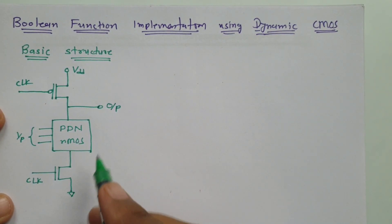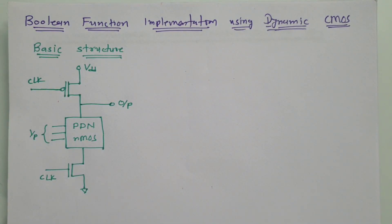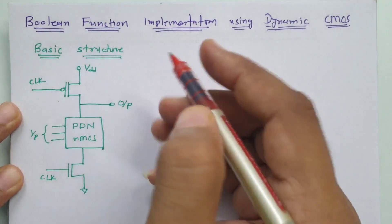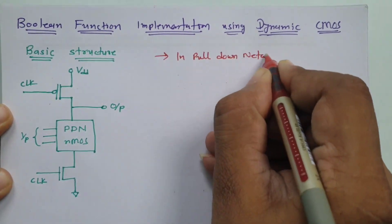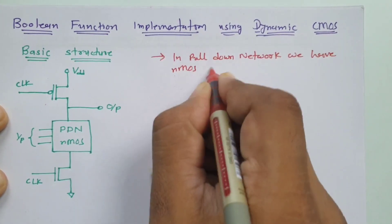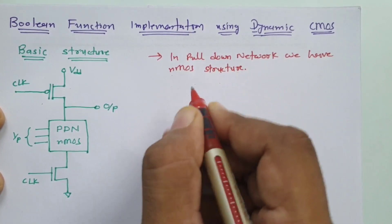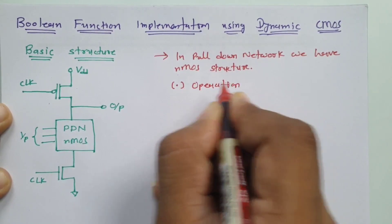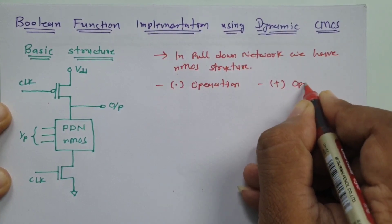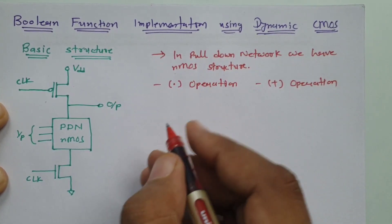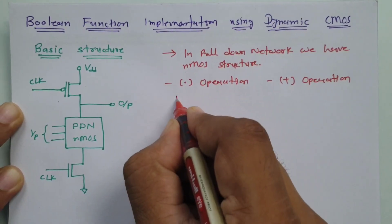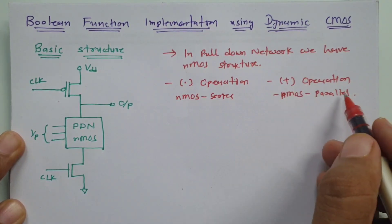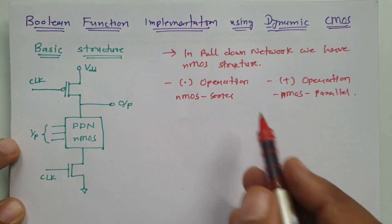This is how the basic structure is there with dynamic CMOS. When you want to form a Boolean function, we modify the pull-down network. In the pull-down network we have an NMOS structure, and there are basically two operations to perform: one is the dot operation and the second is the plus operation. Dot operation means AND operation, and plus operation means OR operation. For dot operation, NMOS should be connected in series, and for plus operation NMOS is connected in parallel.